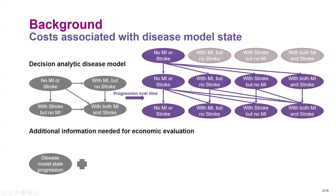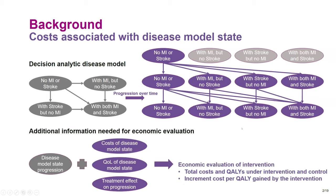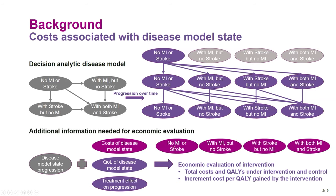With decision analytic disease models, we need additional information to perform economic evaluations. We can predict disease model state progression, but we also need the cost of each disease model state, the quality of life for each state, and the treatment effect on progression. This allows us to calculate the total cost and quality under intervention and control, and then calculate the incremental cost per quality gained by the intervention.